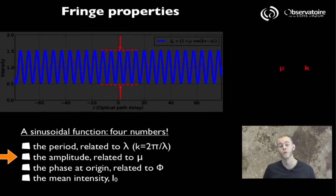The other numbers, on the other hand, we don't know them. The first important number is going to be the amplitude of the modulation we see in our interference fringes, which is something we are going to relate to the visibility modulus of our coherence function.